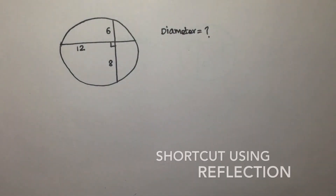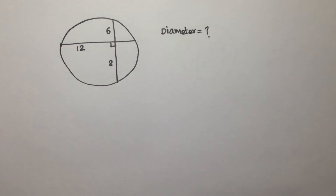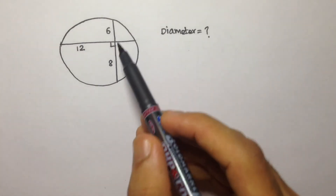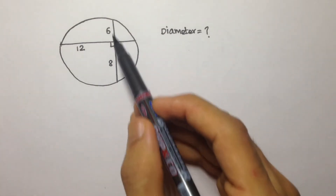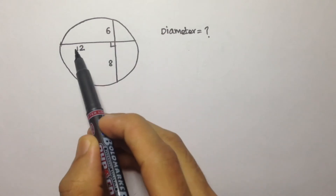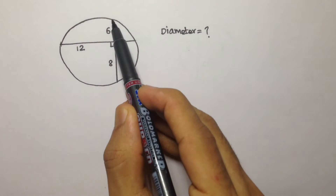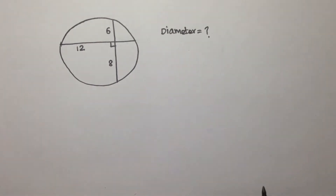Hello, welcome to the channel Learn to Exist. Today we are going to discuss this problem: we have two chords intersecting at right angles, with lengths 12, 8, and 6. We are asked to find the diameter of the circle. First, we have to find out the missing length.